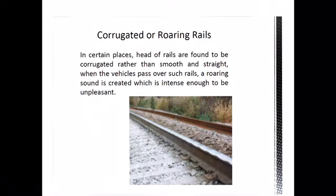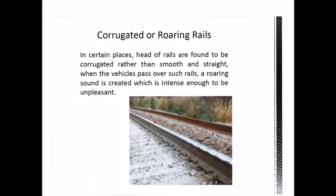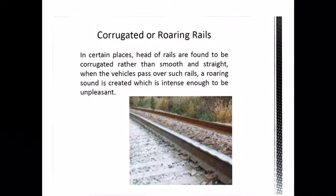The first type of defect is corrugated or roaring rails. In certain places where brakes are frequently applied, or where the train starts, the rail head is found to be corrugated compared to other sections of the track. Corrugations form on the head of the rail section, and whenever a train passes over such corrugated rails, a roaring sound occurs. That roaring sound is very unpleasant, which is why this defect is also called roaring rails.